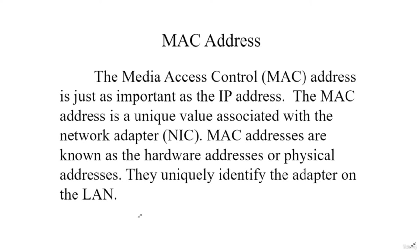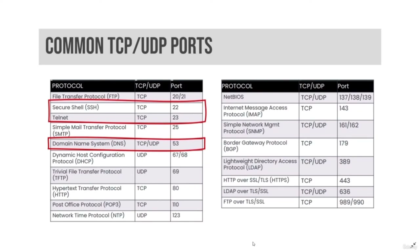IPv6 auto-configuration is compatible with both 48-bit and 64-bit MAC address types. Hypertext Transfer Protocol, or HTTP, transfers unencrypted web-based data. HTTPS, or Hypertext Transfer Protocol Secure, transfers encrypted web-based data via SSL/TLS. HTTP uses TCP port 80, and HTTPS uses TCP port 443. HTML, or Hypertext Markup Language, is used to display web content.